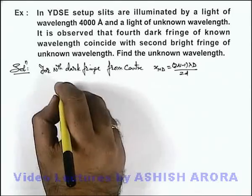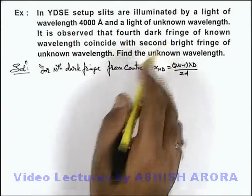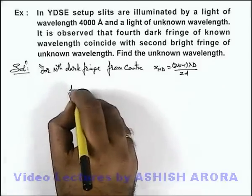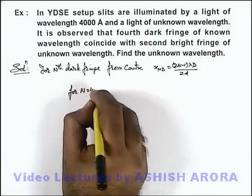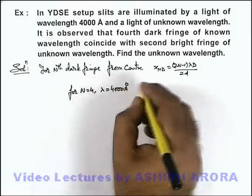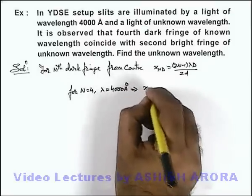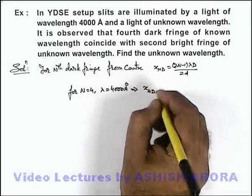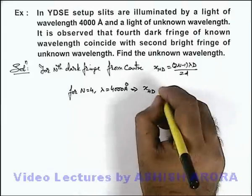So here as it is saying fourth dark fringe of known wavelength, that means here for n=4, we can use λ=4000 angstrom. This implies x_4d, the fourth dark fringe for 4000 angstroms is given as, if we substitute n=4 this will be (8-1) 7 multiplied by